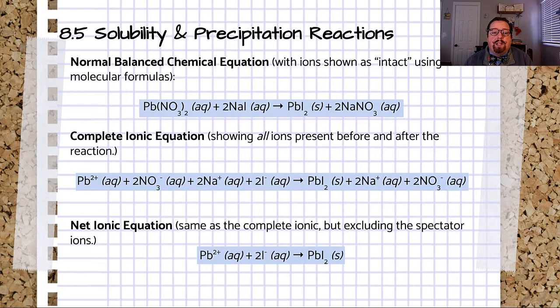There are three ways to represent our precipitation reactions: the normal balanced equation that you're used to, the complete ionic equation, and the net ionic equation.